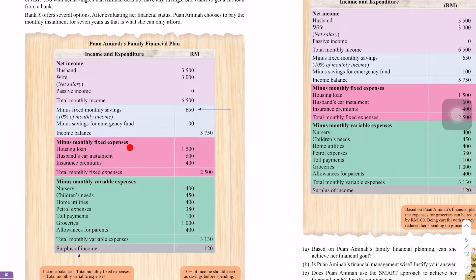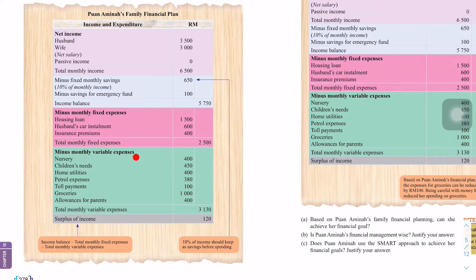Minus monthly fixed expenses. Fixed expenses: housing loan, husband car installment and insurance premium. So, ada RM1,500, RM640, RM100. Minus monthly variable expenses. Dan monthly variables ni mungkin akan berubah-ubah lah. So, nursery, RM400, children's need, home utilities, petrol expenses, toll payment, groceries allowance for parents. So, kita tengok. Surplus of income. RM5,200. What is surplus of income? Income balance minus total monthly fixed expenses minus total monthly variable expenses. So, maki dia tinggal lah RM1,200.